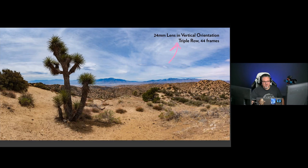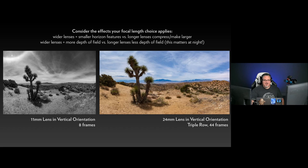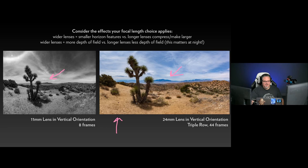Instead of 11mm, we got 24mm — more than doubled the focal length. Because I did that, I had to do three rows and 44 frames — a big difference. Now you can see it's compressed a lot. Look at the size of the mountain here versus here — if you want distant objects to appear smaller, use a wider lens; if you want them to appear larger, use a longer lens. I actually find this one more pleasing as a pano. It's a lot more work to do a triple row versus a single row, so you need to balance those things.